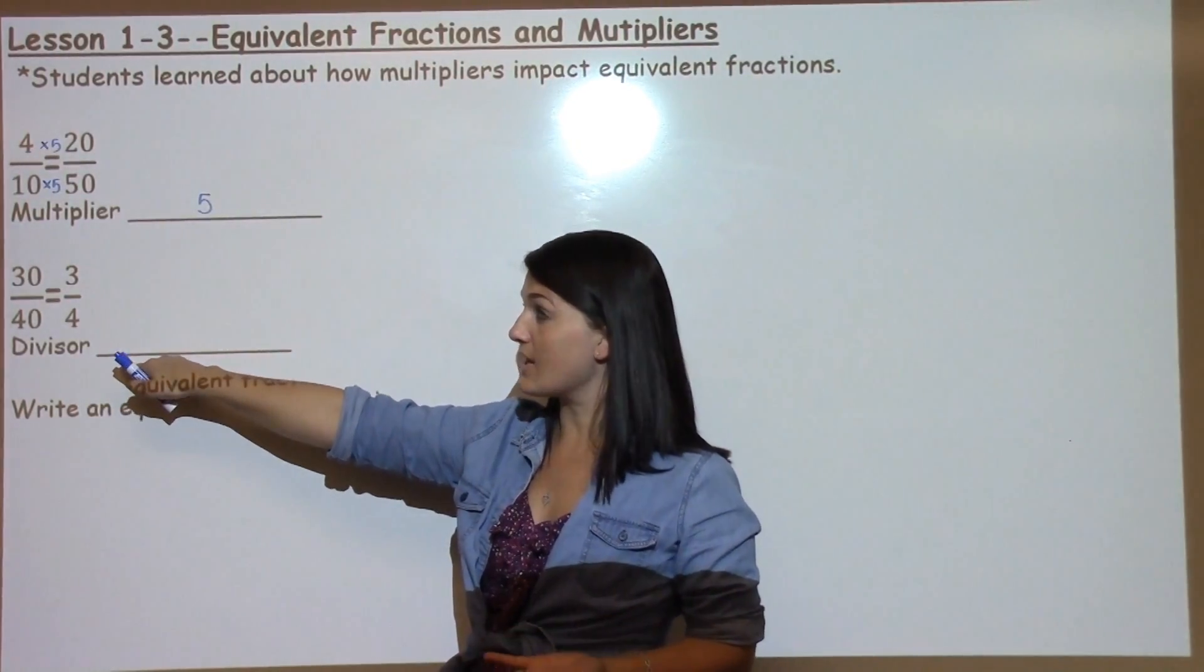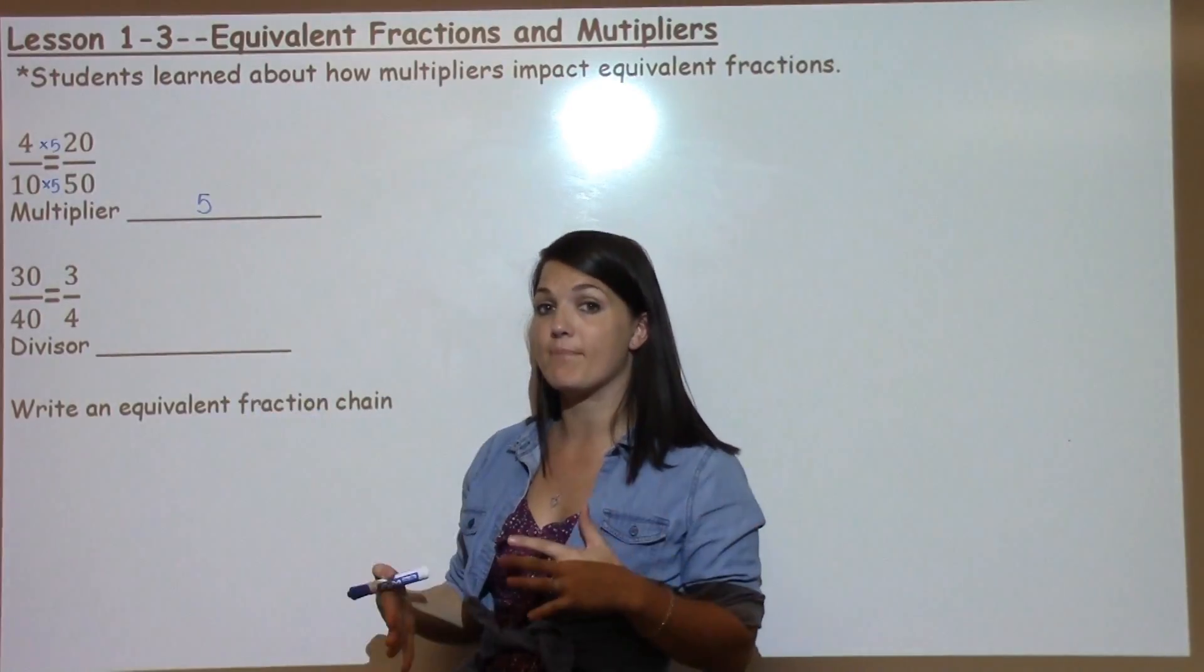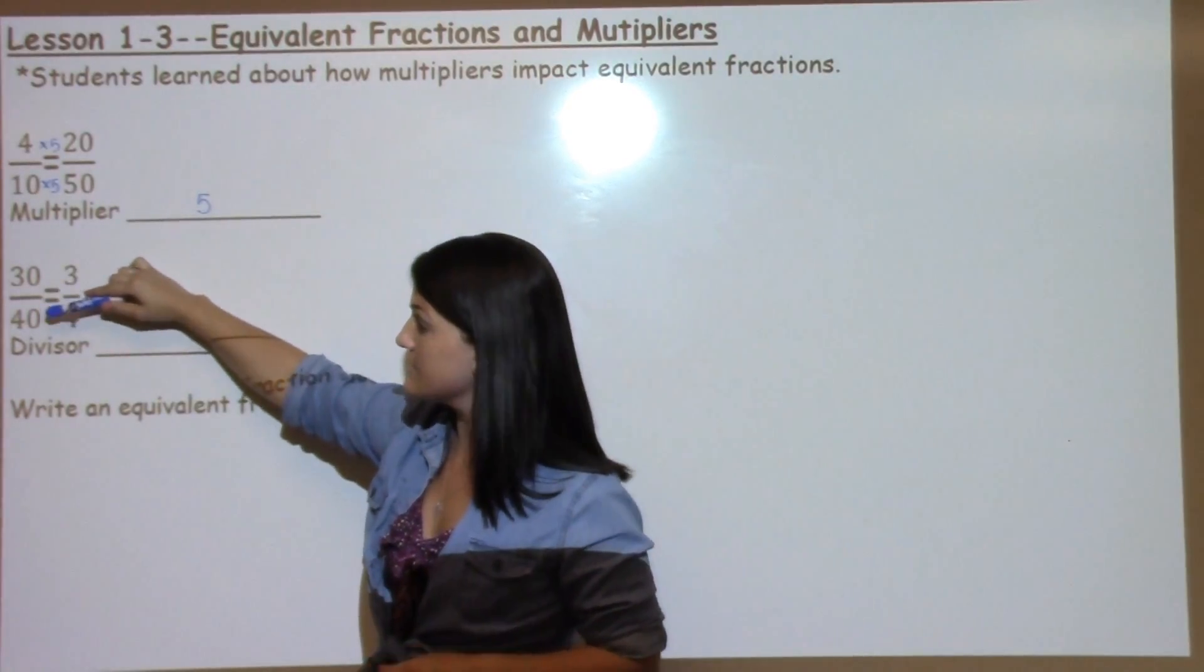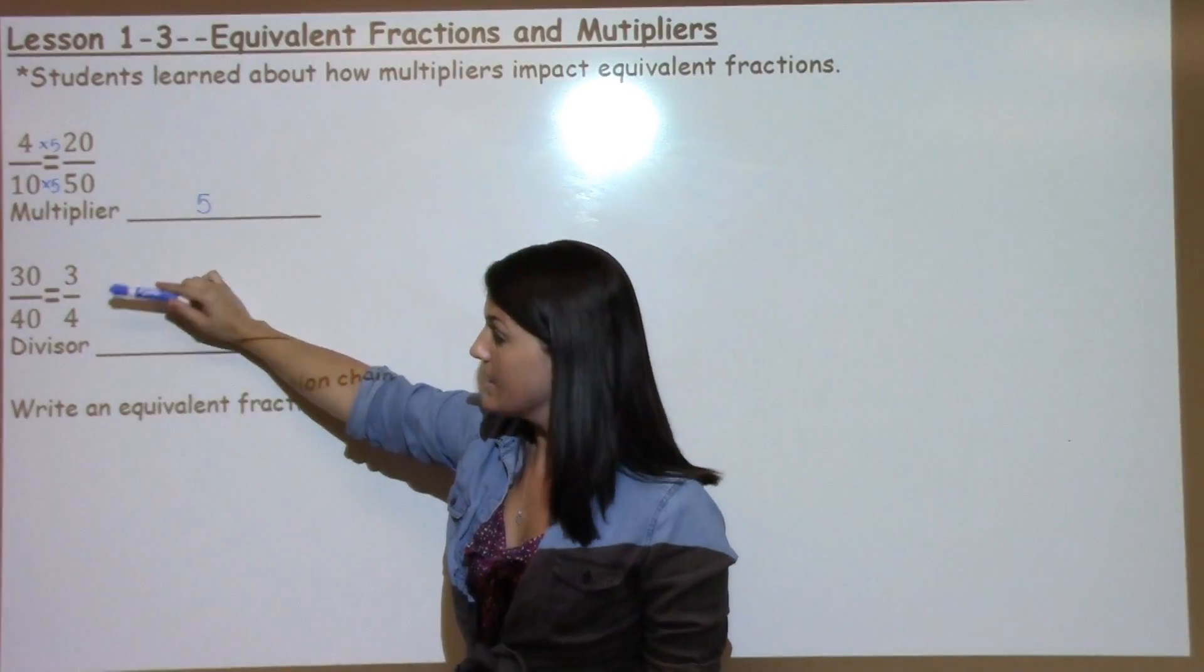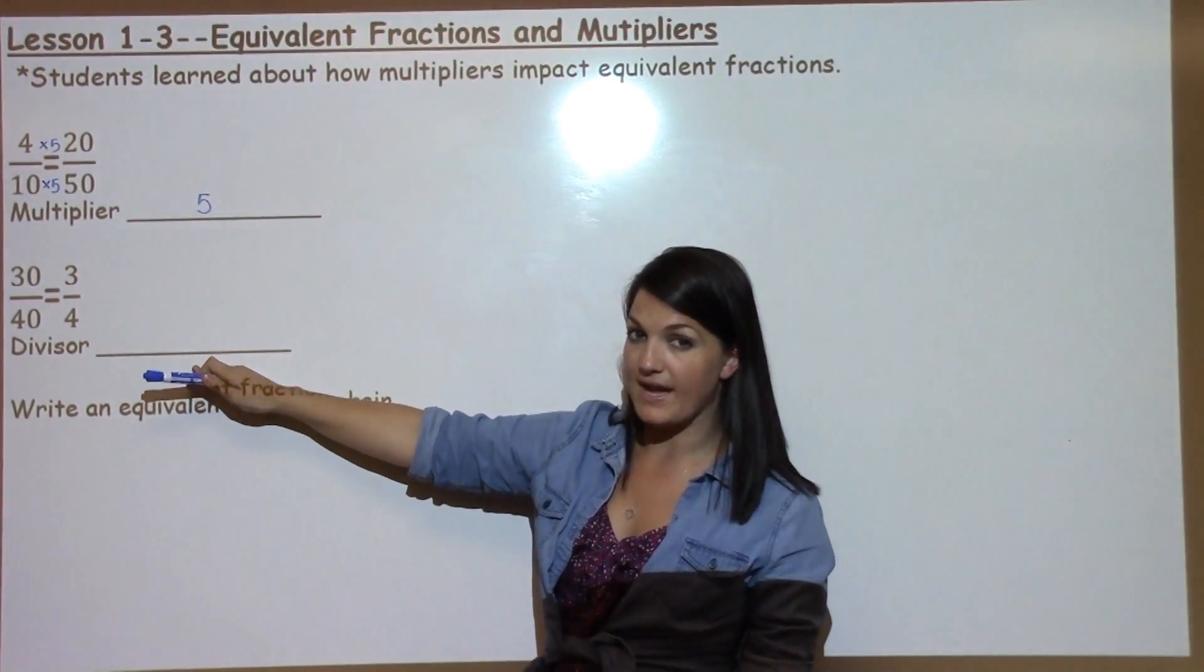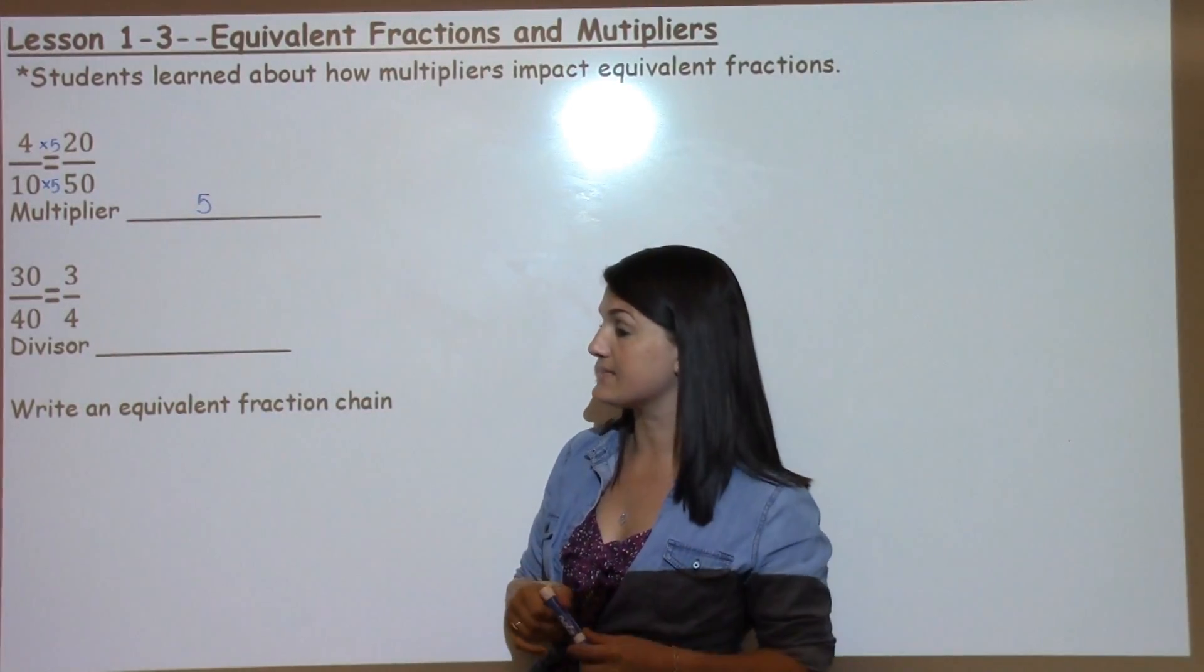With this next problem, we're going to take the exact strategy that we used and just do the opposite with division. We have 30 fortieths is equal to 3 fourths, and we need to decide what is the divisor that connects those two and makes them the same.